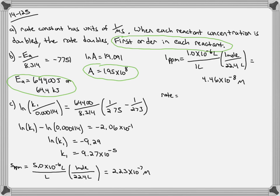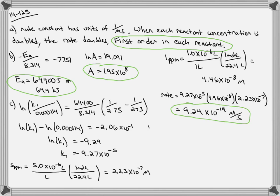Now we have our two concentrations and our rate constant, so we can calculate the rate. Rate equals k multiplied by each concentration raised to the first power, because we determined it was first order with respect to each reactant. This gives us 9.24 times 10 to the negative 19 molar per second as our rate.